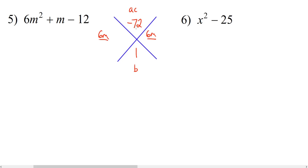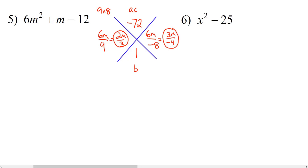9 times 8 is 72 and 9 minus 8 is 1. Since the b value is positive, our bigger number 9 will be positive and our smaller number 8 will be negative. So 9 times negative 8 is negative 72 and 9 minus 8 is 1. Now we simplify the fractions: 6m and 9 can be divided by 3, giving us 2m over 3. And 6m and negative 8 can be divided by 2, giving us 3m over negative 4. So our two binomials are 2m plus 3 and 3m minus 4. That's our answer.